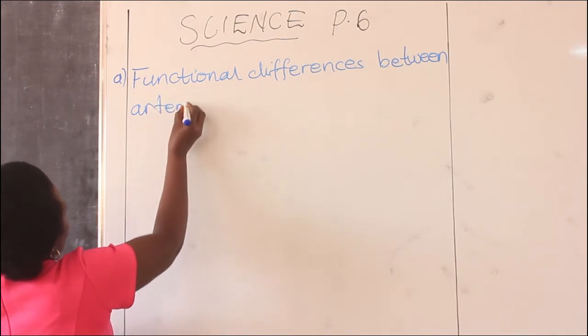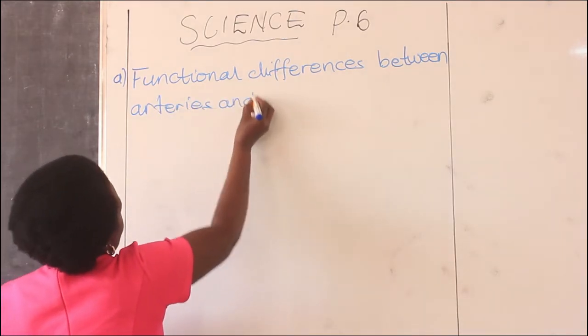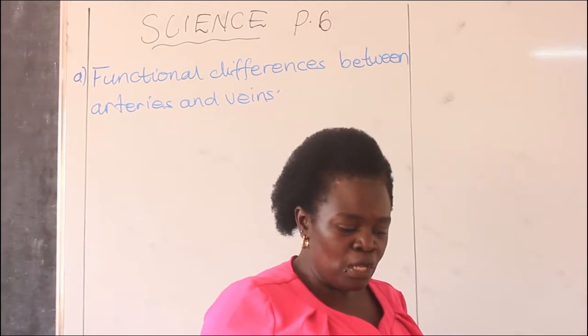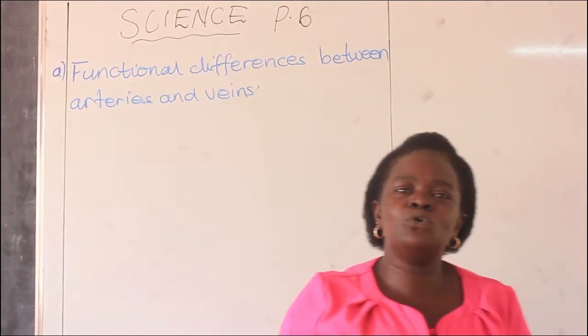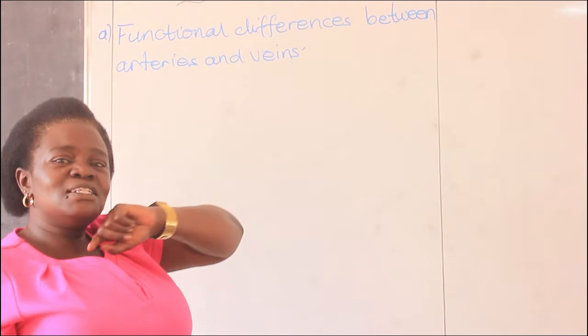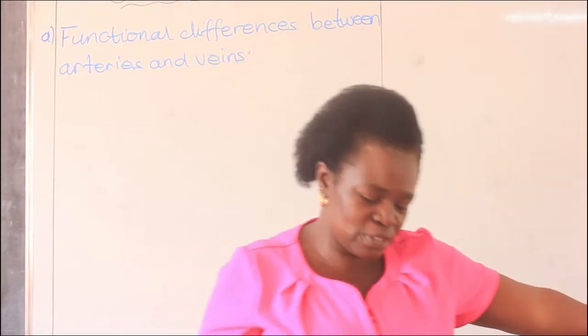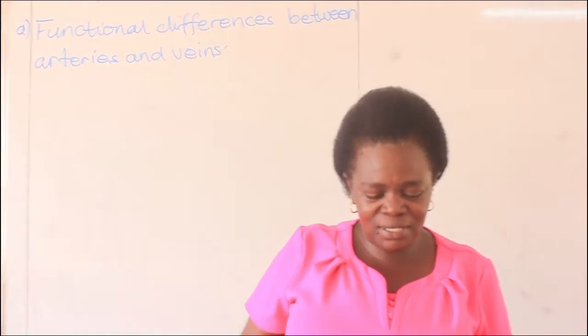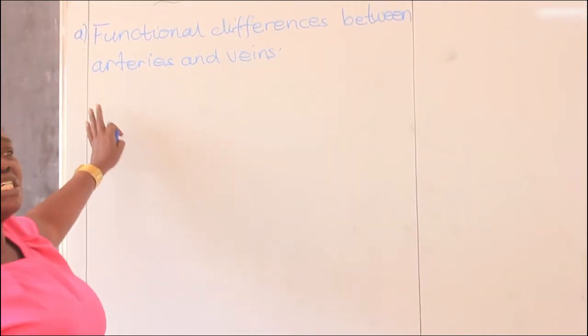Functional differences between arteries and veins. We have already looked at the differences before. From those differences we are just going to pick out which one is functional and which one is structural. By functional it simply means that in terms of their function they have a difference. When it comes to functional differences, we have only one functional difference between arteries and veins. That functional difference is already in our differences we wrote the other time. For revision purposes, let me put it down on the blackboard.